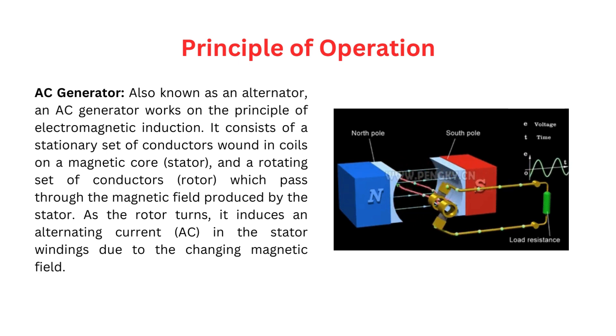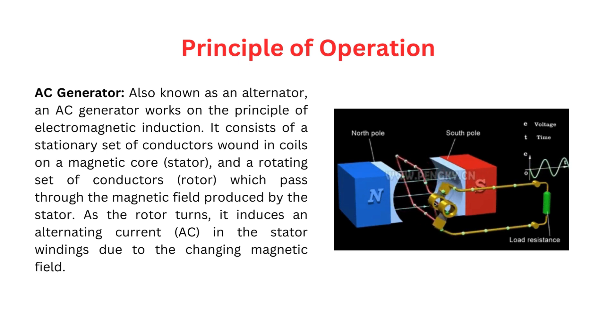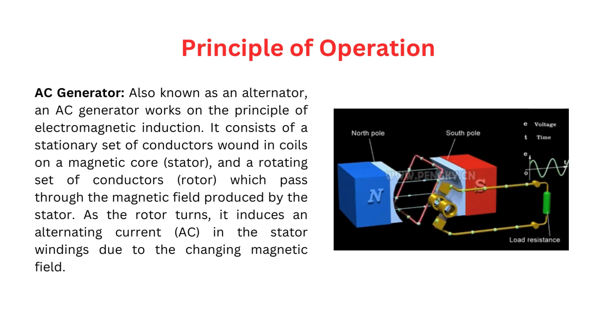As the rotor turns, it induces an alternating current, AC, in the stator windings due to the changing magnetic field.